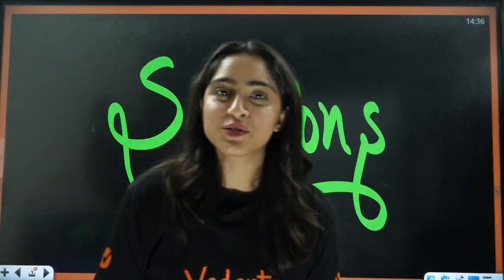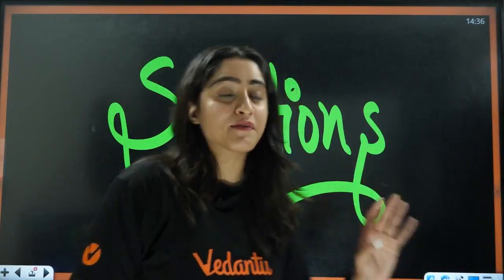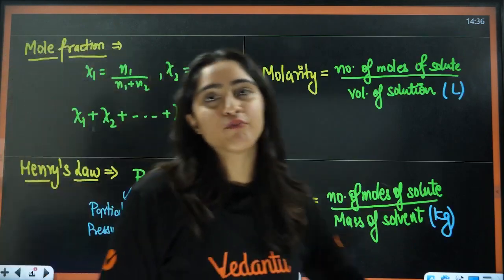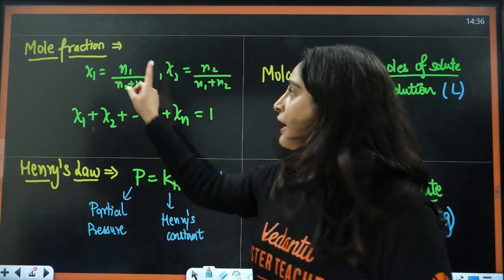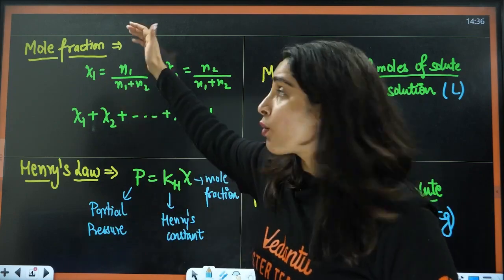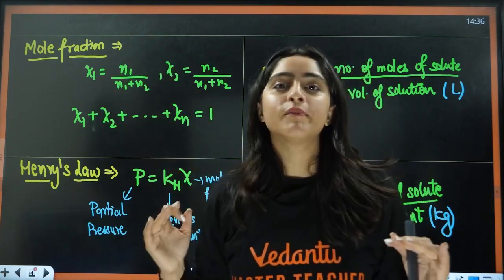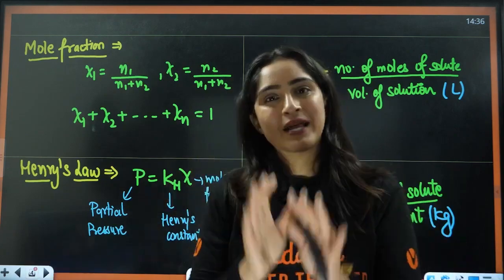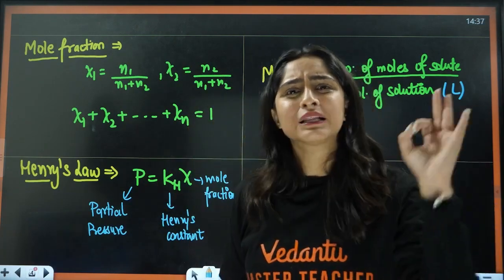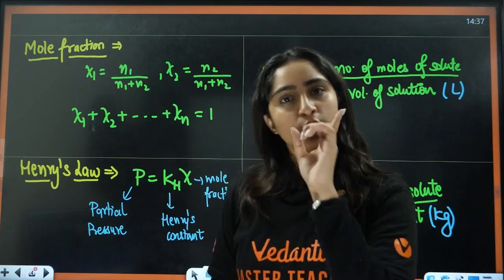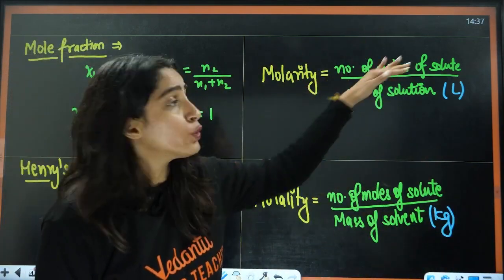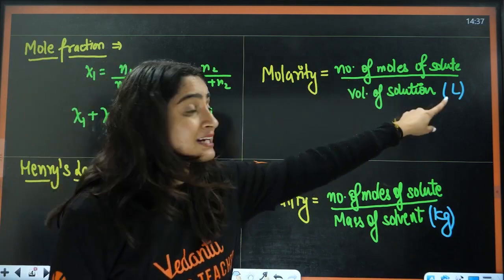Starting off with solutions first. For solutions, we have some concentration terms. That is mole fraction — firstly, we have mole fraction. Mole fraction is: if you want to calculate the mole fraction of the first component, it is the number of moles of the first component divided by the total number of moles of all the components present in that mixture. And the mole fraction of all the components equals unity. Next, we have molarity — that is number of moles of solute divided by volume of solution.